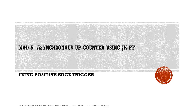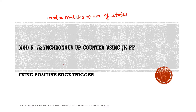Mod 5 asynchronous up counter using JK flip-flop with positive edge trigger. Here 'mod' stands for modulus, which indicates the number of states. Mod counters refer to the number of states through which the counter passes before returning to its initial state — that count is called the modulus.